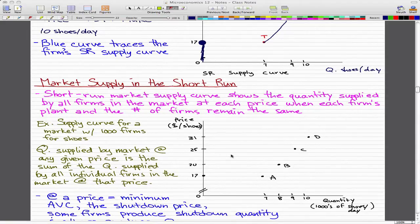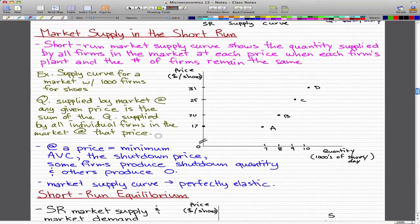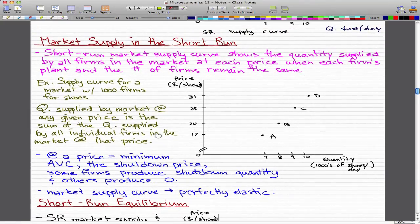Let's go through an example. That's what we do best. For example, let's say that in this figure, we have a supply curve for a market with 1,000 firms that make shoes.